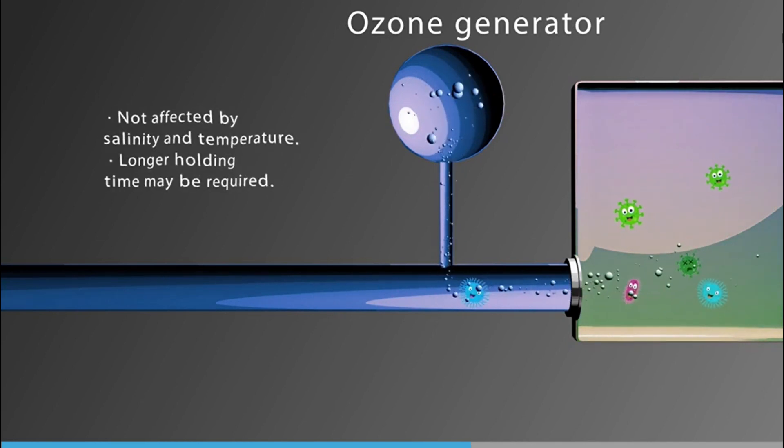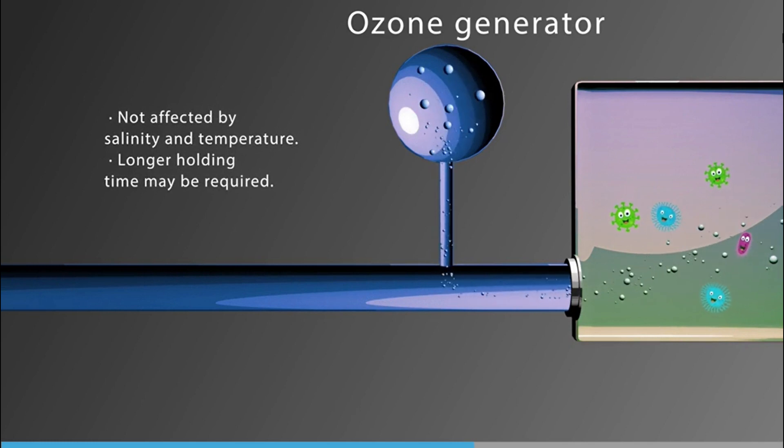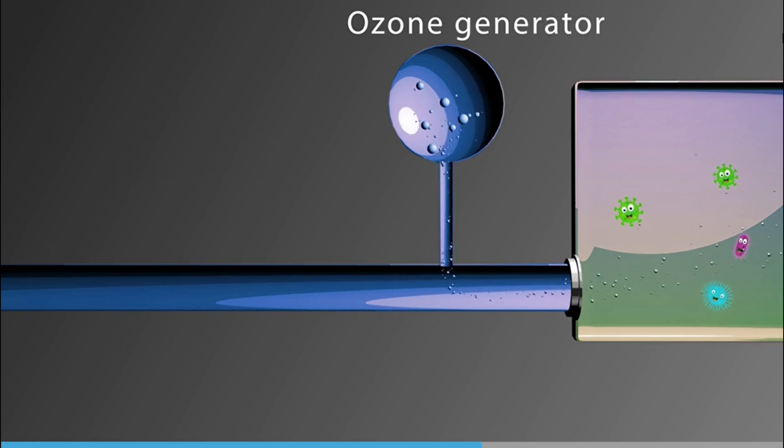Salinity and temperature are not obvious factors affecting the efficiency of ballast water treatment systems employing ozonation, however longer holding time may be required. Both ozone and hypobromous acid disintegrate extremely rapidly. Ozone disintegrates significantly slower in freshwater than in seawater.